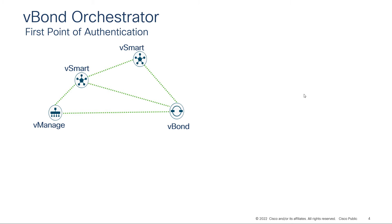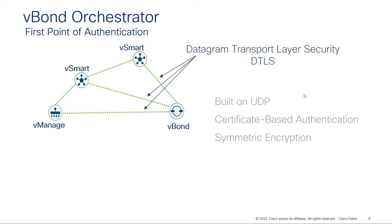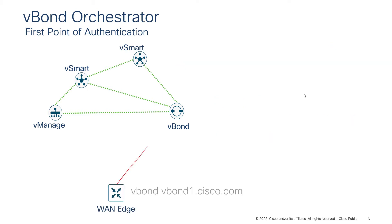The V-Manage and V-Smart controllers establish control connections to the V-BON using Datagram Transport Layer Security, or DTLS. DTLS is built on UDP and uses certificate-based authentication in combination with symmetric encryption to secure the data sent over it. When a WAN edge router attempts to enter the overlay, it sends a connection request to the V-BON. Note that if you're not doing automated provisioning, every SD-WAN device is required to be configured with the V-BON hostname or its IP address so it knows how to reach the V-BON when it is brought into the network.